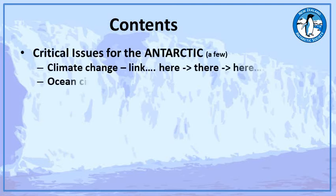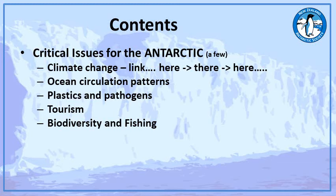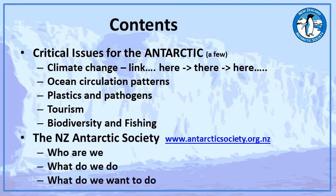The next part we will move on to the critical issues for Antarctica. We'll only have time for a few of these, so we'll look particularly at climate change, making the link between what's happening in our normal lives, what's happening in Antarctica, and what's happening back here. As part of that we'll talk about ocean circulation patterns, plastics, pathogens, tourism, biodiversity and so on. And the third part we'll look at the Antarctic Society — what it is, who we are, what we do and what we're trying to do.